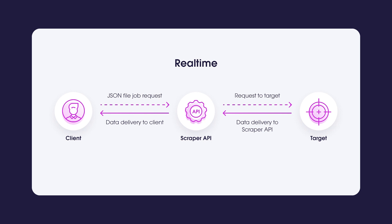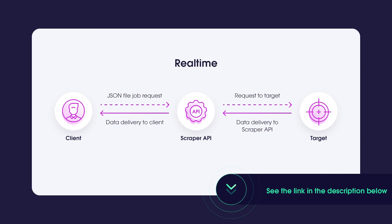Real-time is a synchronous method. You have to maintain the connection open from the moment you submit your job until we return the results of a successfully completed job or an error. To submit a request, you need to provide a JSON file describing the job that needs to be done, including fields such as source, geolocation, query, and so on. Note that the JSON needed for job submission in real-time is unique to our service and requires some additional knowledge.